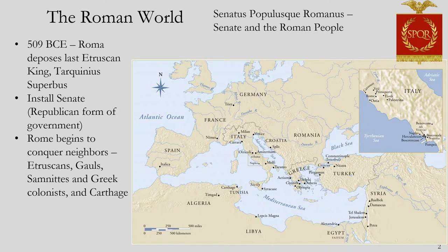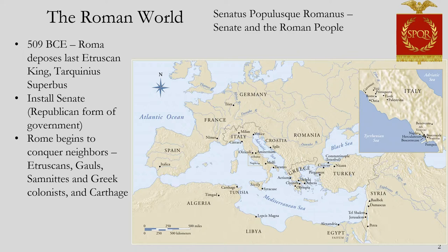Rome will eventually morph into a massive empire. But when we first start our journey, Rome is under Etruscan rule — located in Italy, with the Etruscans controlling a good part of it. Around the 6th century BCE, Rome is under Etruscan rule. But in 509 BCE, Rome deposes the last Etruscan king, Tarquinius Superbus, and installs a senate.